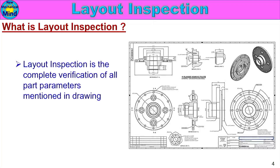Layout Inspection is the complete verification of all part parameters mentioned in the drawing. Normal inspection checks one product — parts dimensions, surface finish, parts finish. This is normal inspection. Layout inspection goes further.